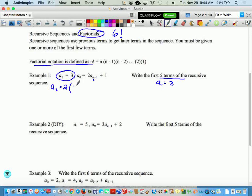So basically, what you're doing is 2 times your very last answer plus 1. And when I do this, I get 6 plus 1, which is 7.